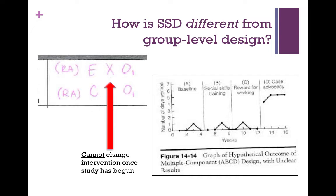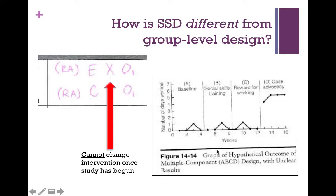Another significant difference from group level designs is that in group level design, once you begin your study you cannot change your intervention. It's an a priori intervention — you plan it ahead of time and stick with it. In single systems design, however, you can change your intervention once your study has begun. Most of the time we use single systems design with our clients as practitioners, while group level design is used for research to build the knowledge base. Single systems design is more geared towards practitioners.